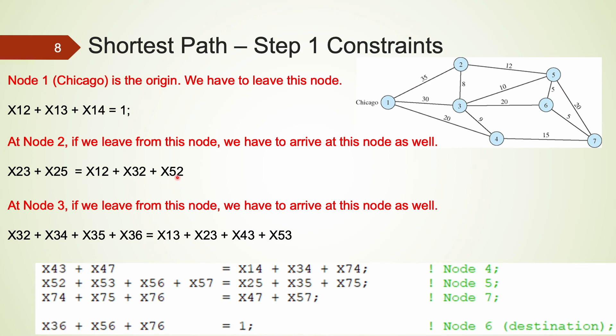Using the same logic, we can write one constraint for each node. We would be having a total of 7 constraints. Please pause the video here and examine all the constraints carefully.